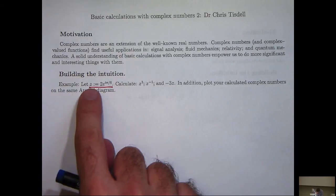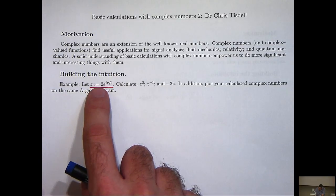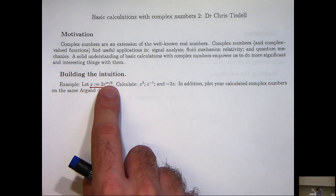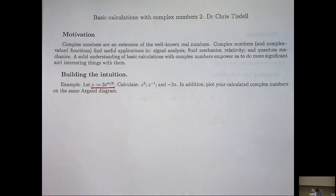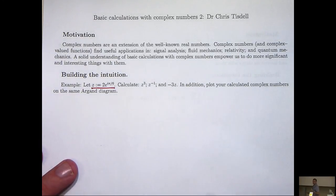Now, here we have a particular complex number that's written in polar form. Now, there's a length, in this case 2, and an angle, in this case π/6, associated with the polar form. And we're asked to calculate z³, z^(-1), and -3z.